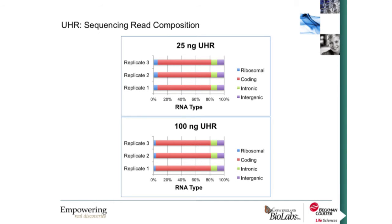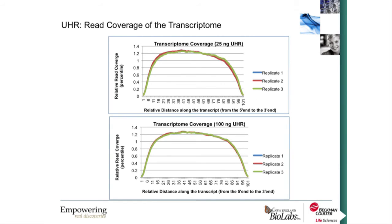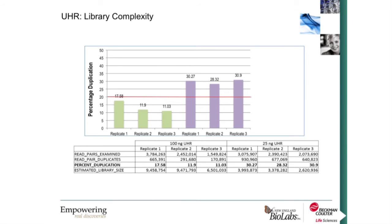Looking at the sequencing read composition, we're overwhelmingly seeing coding region with low percentages of ribosomal RNA, so we're targeting the parts of the genome we're interested in. Our transcriptome coverage is very uniform across the length of the transcript, with no 3-prime or 5-prime bias among replicates. We do see a drop in complexity for the lower input samples, as expected — percent duplication is a little bit higher for 25 nanogram inputs compared to the 100 nanogram inputs, but we feel this is very solid data.